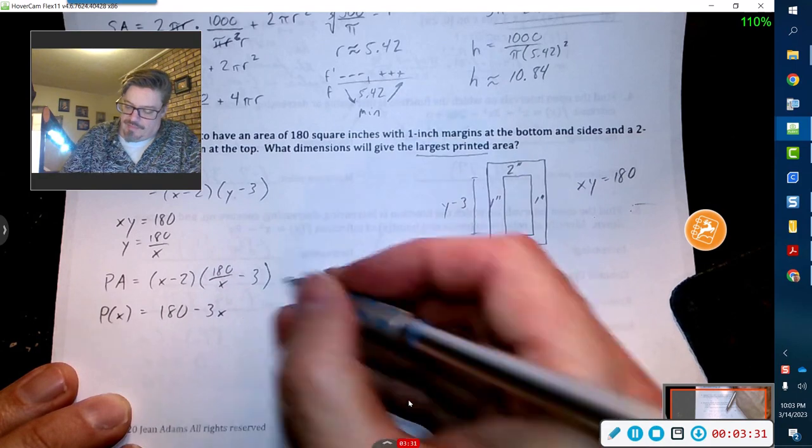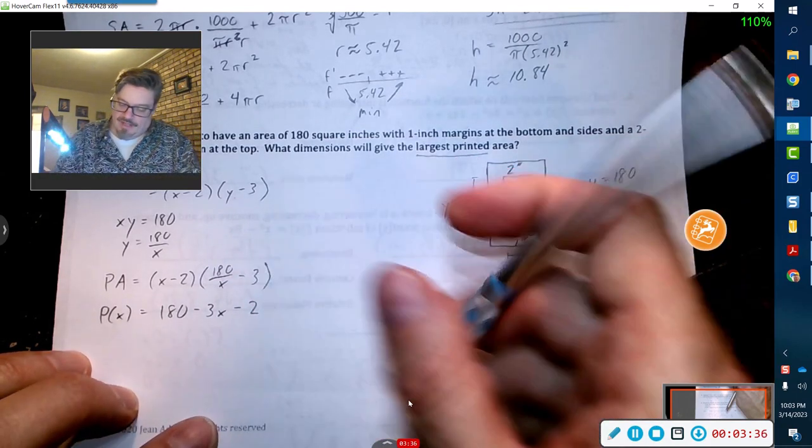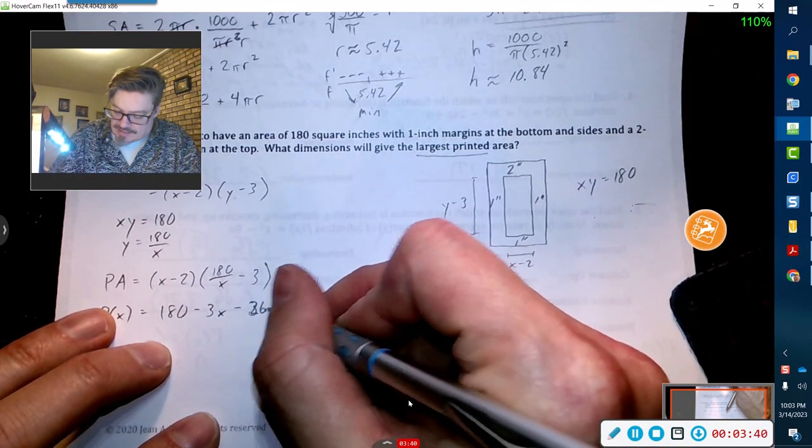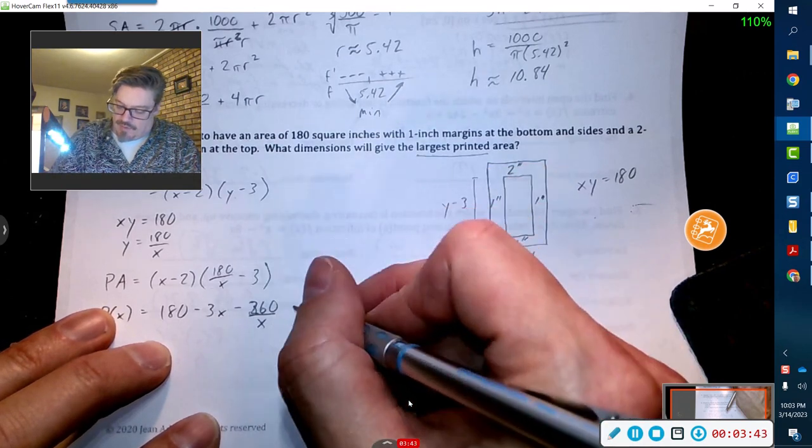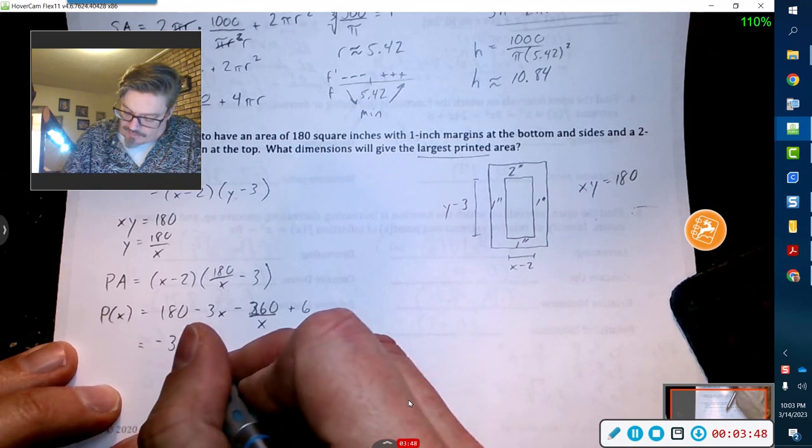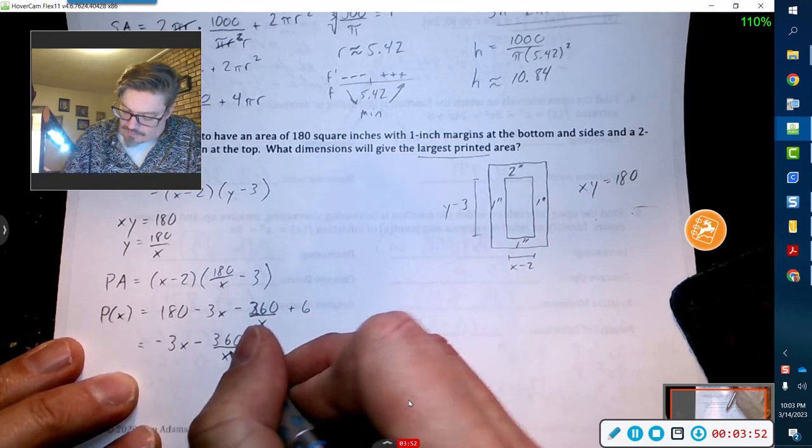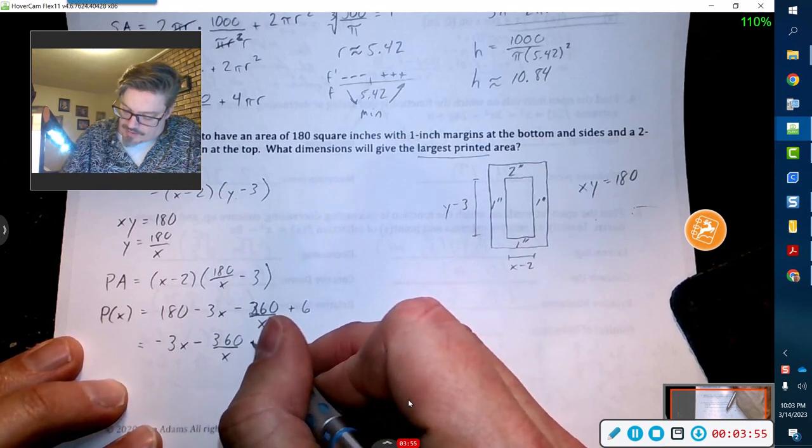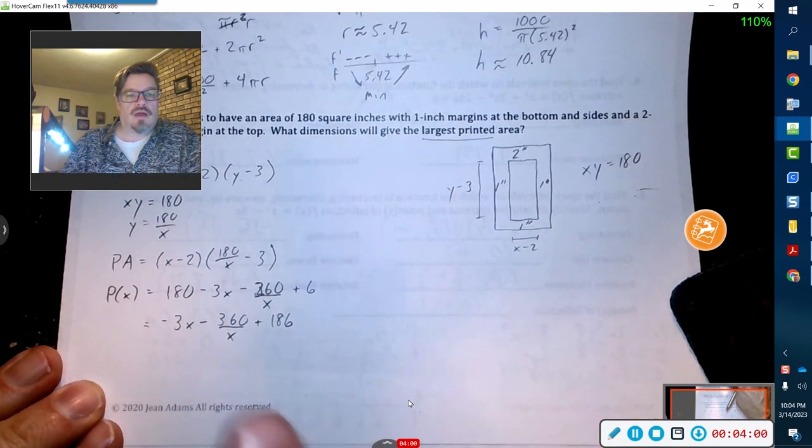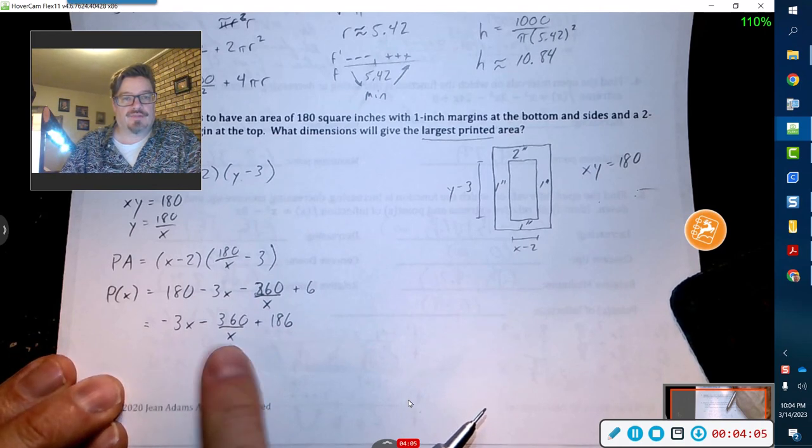Then x times negative 3 is minus 3x. This will then become minus 360 over x, plus 6. So now I got minus 3x minus 360 over x plus 186.